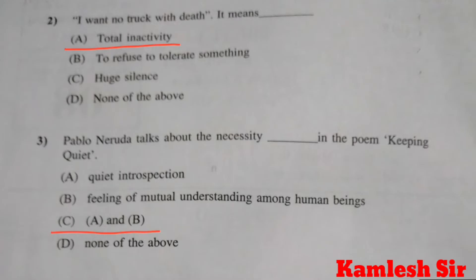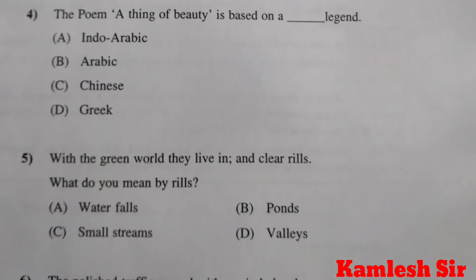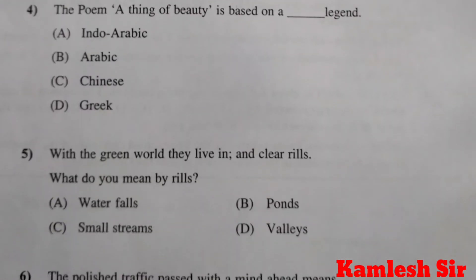4th question: The poem A Thing of Beauty is based on a dashed legend. The right answer of question number 4 is D, Greek.